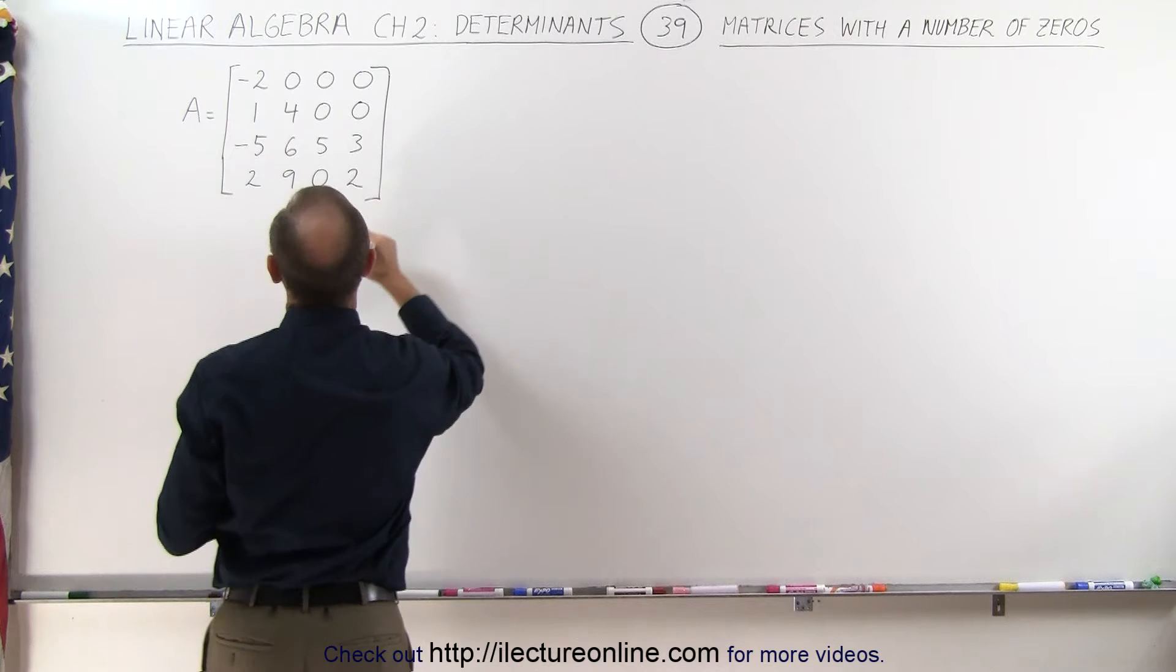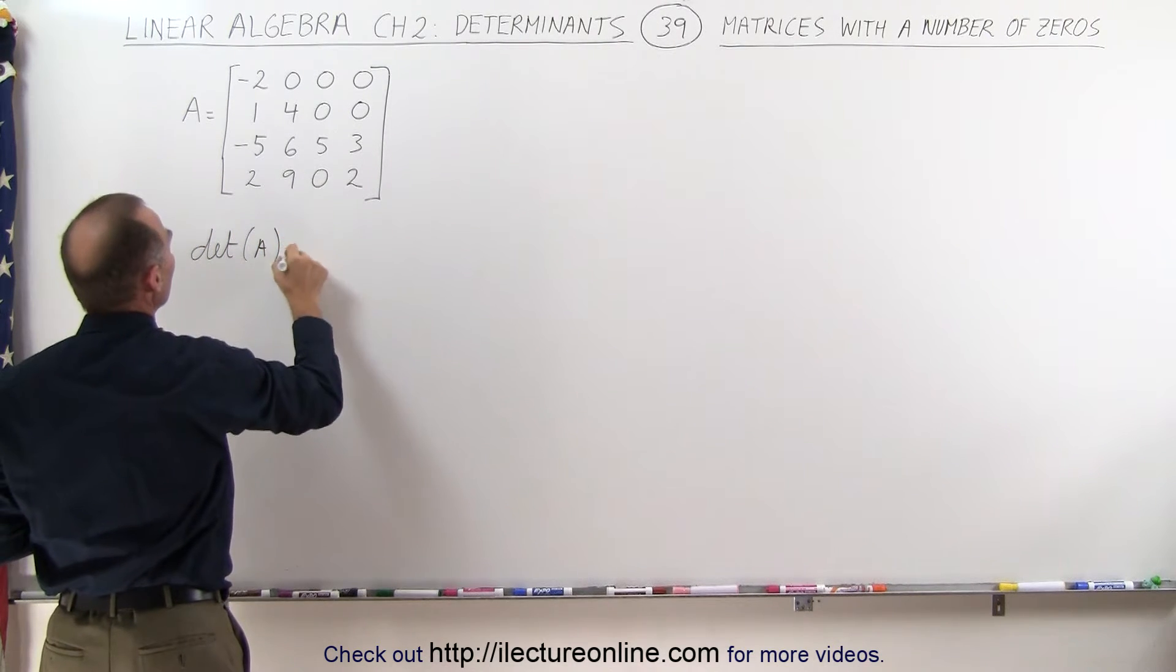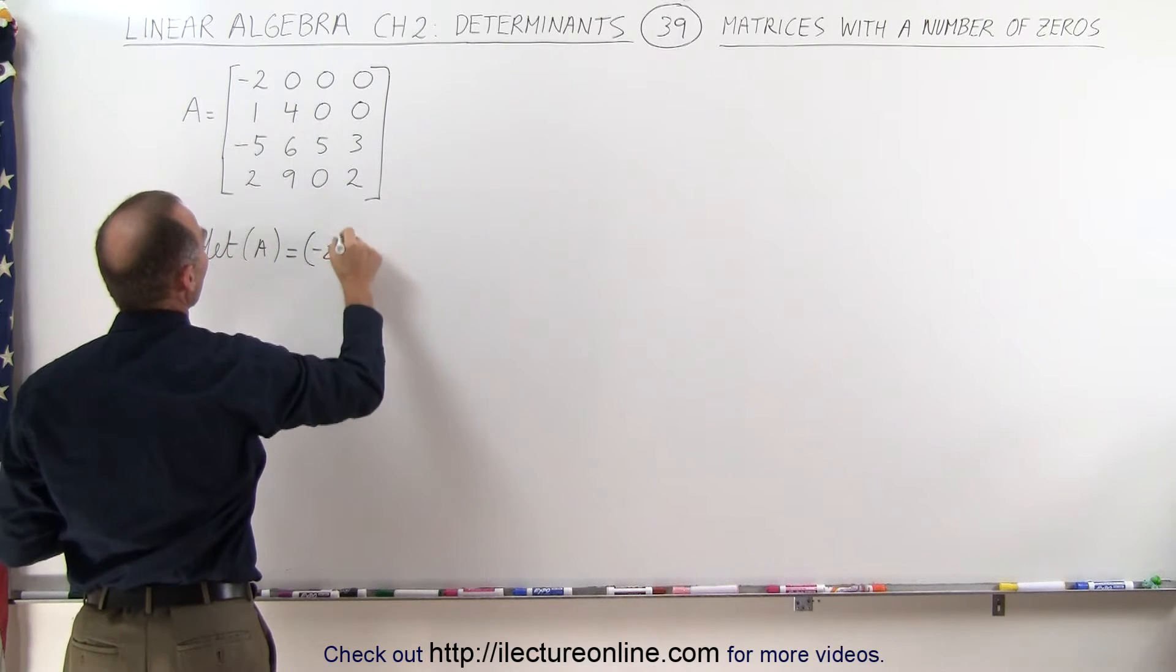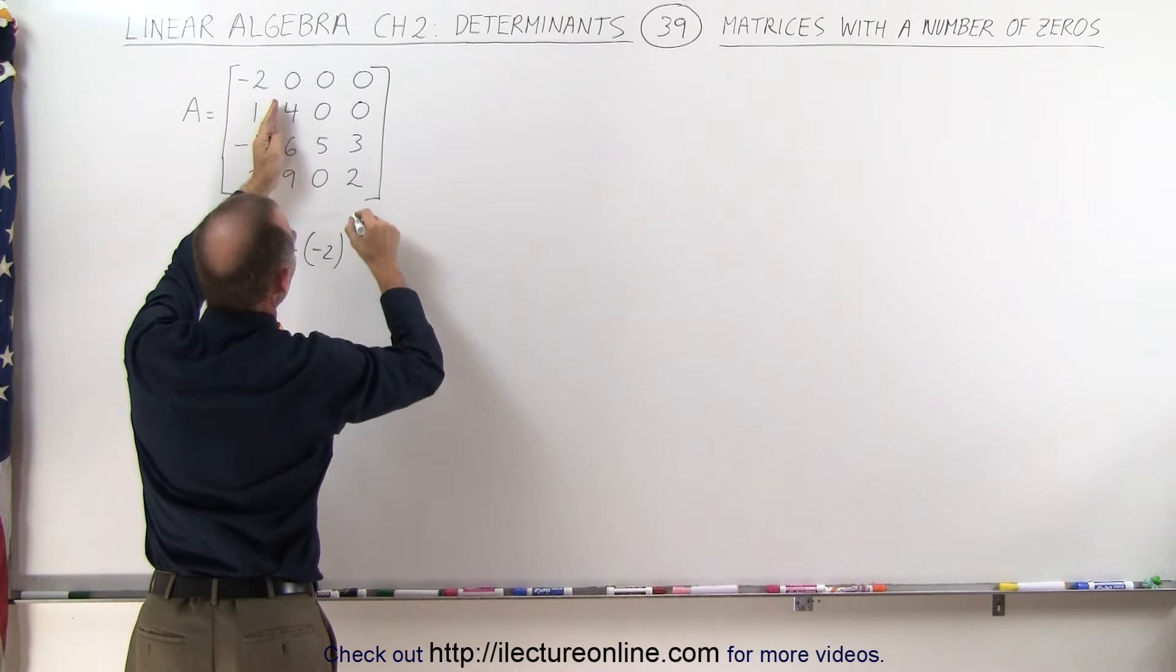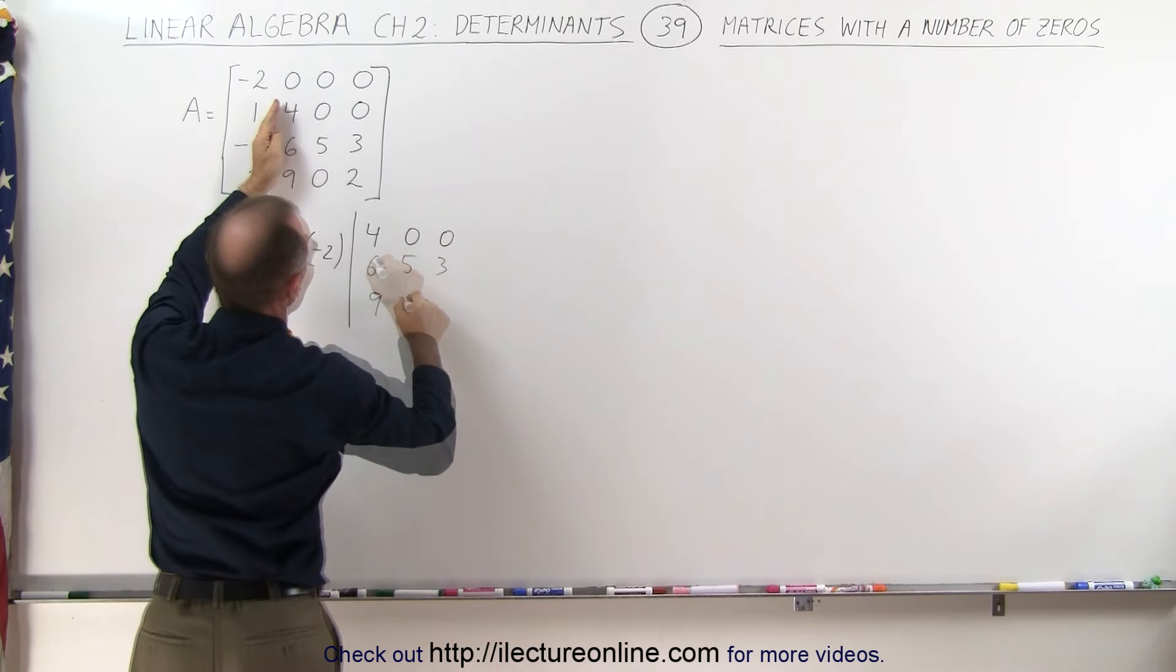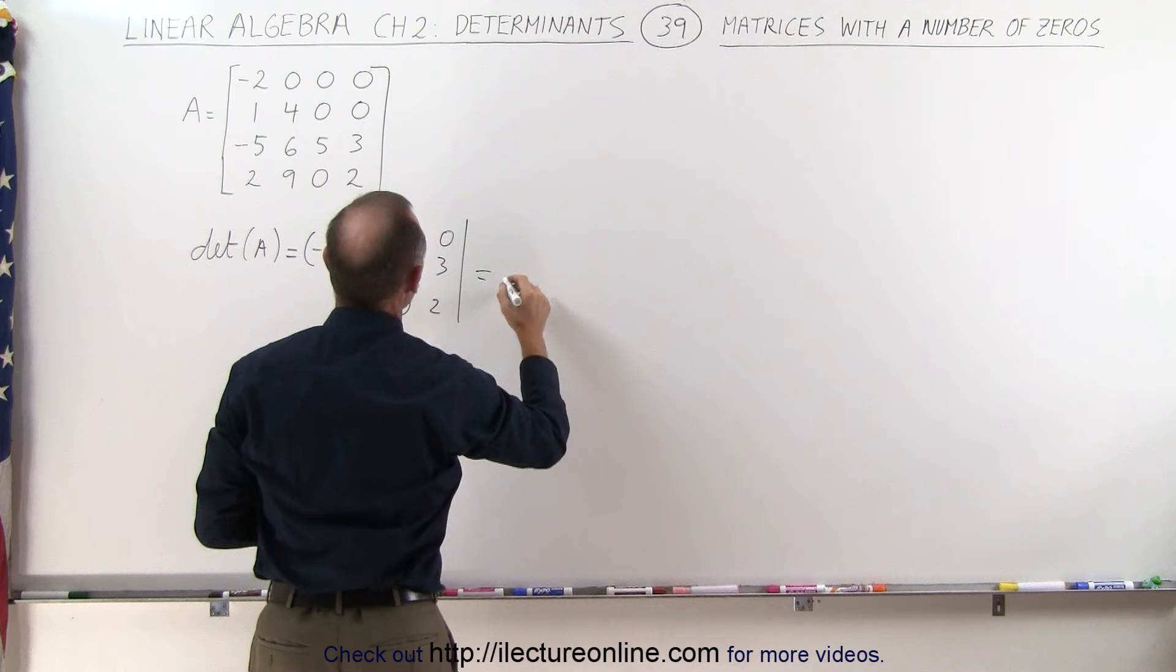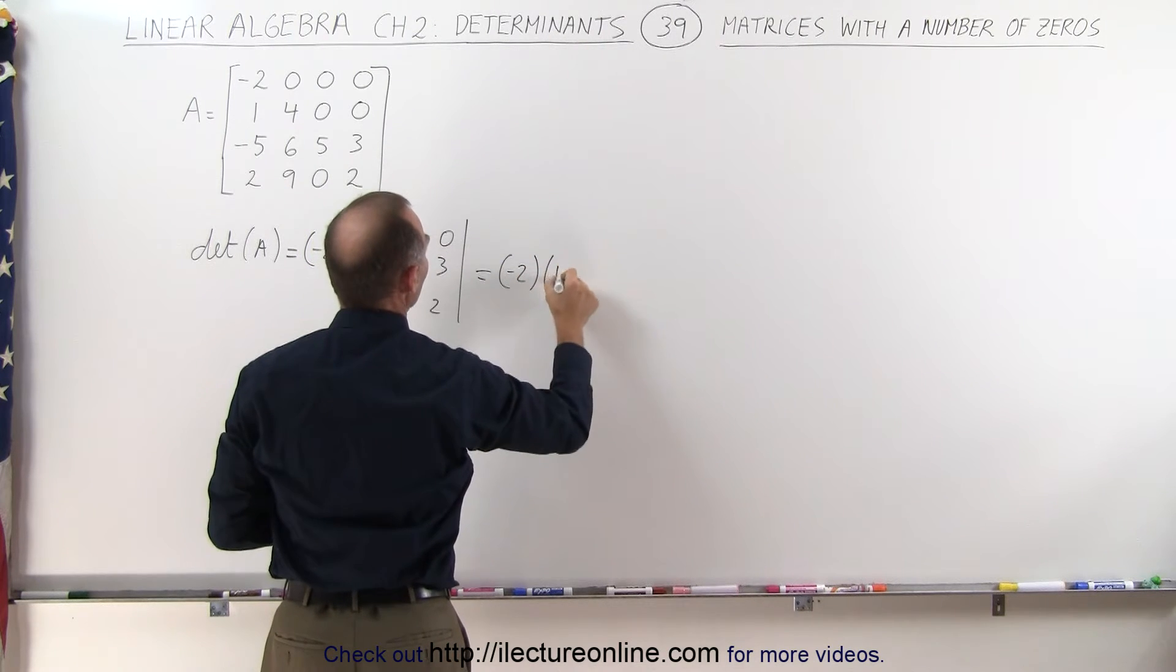This can then be written as follows. The determinant of A can be written as the single element right here, negative 2, multiplied times the determinant of this matrix right here. So that's times the determinant of the matrix [4 0 0; 0 2...]. But since these are zeros, that means this can now be written to be negative 2 times 4.